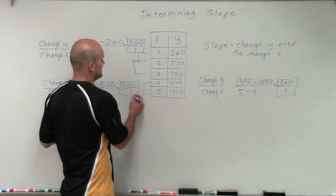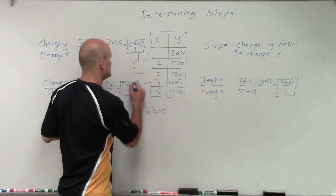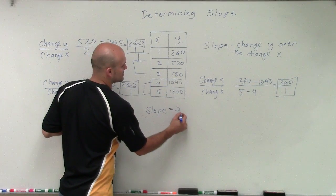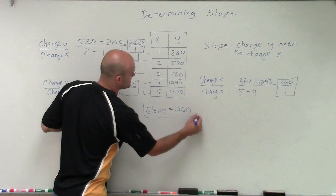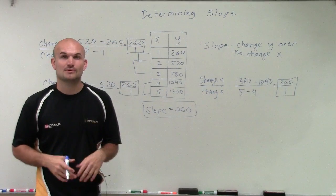this constant is what we call our slope. And if I take 260 over 1, then I get 260. And that is going to be my slope for my table. Thanks.